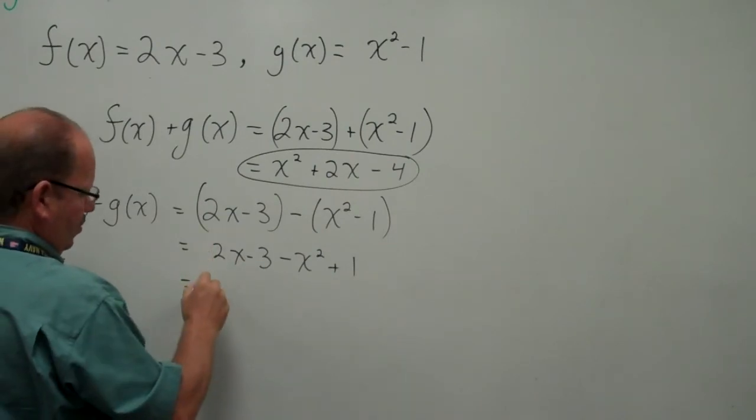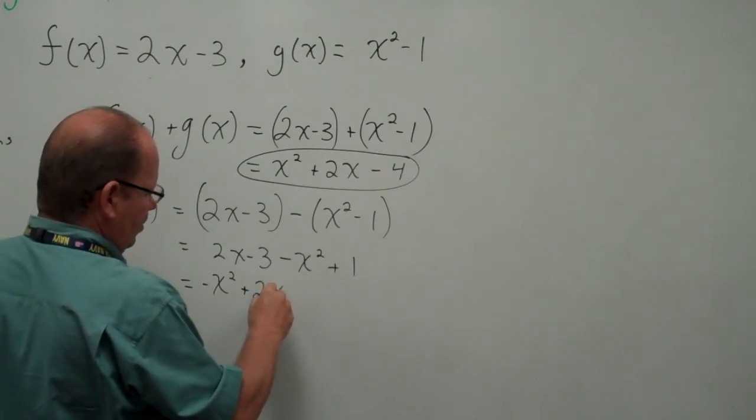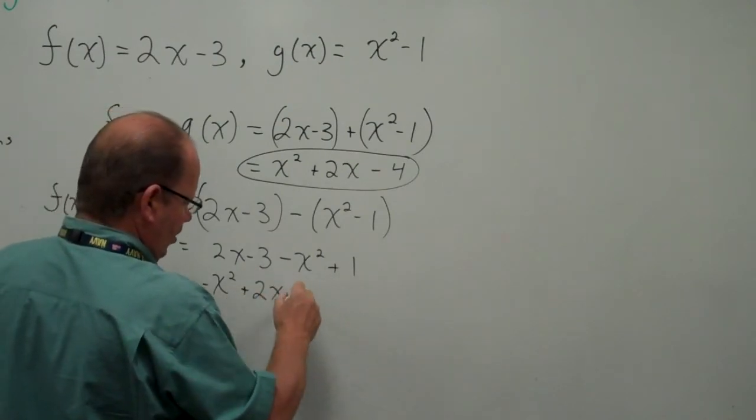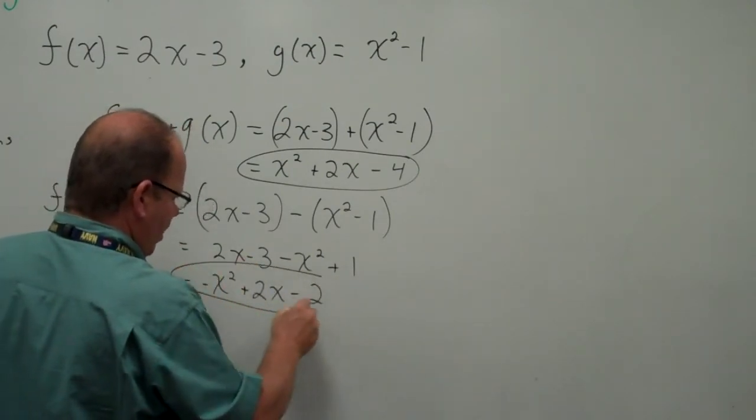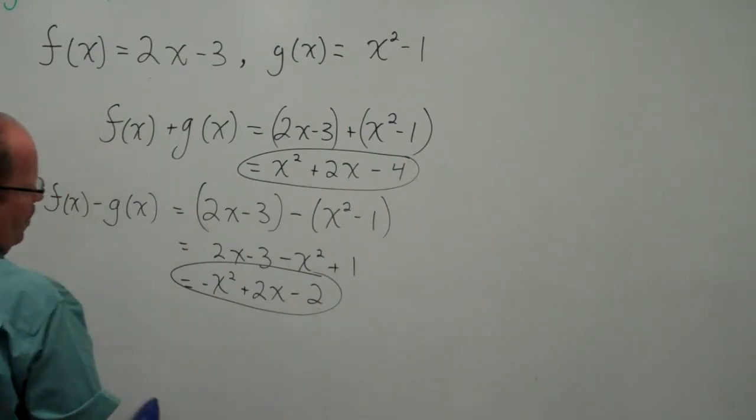And to write them again in descending order, what we're going to learn is called the standard form: -x² + 2x - 2. Use your pause and fast forward if you need to, moving right along.